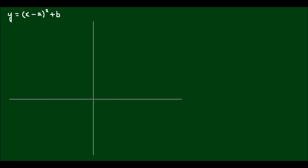Hello and welcome. Suppose I have the parabola y is equal to (x - a)² + b. We note that this is a parabola written in vertex form, and the vertex is going to be at the point (a, b).